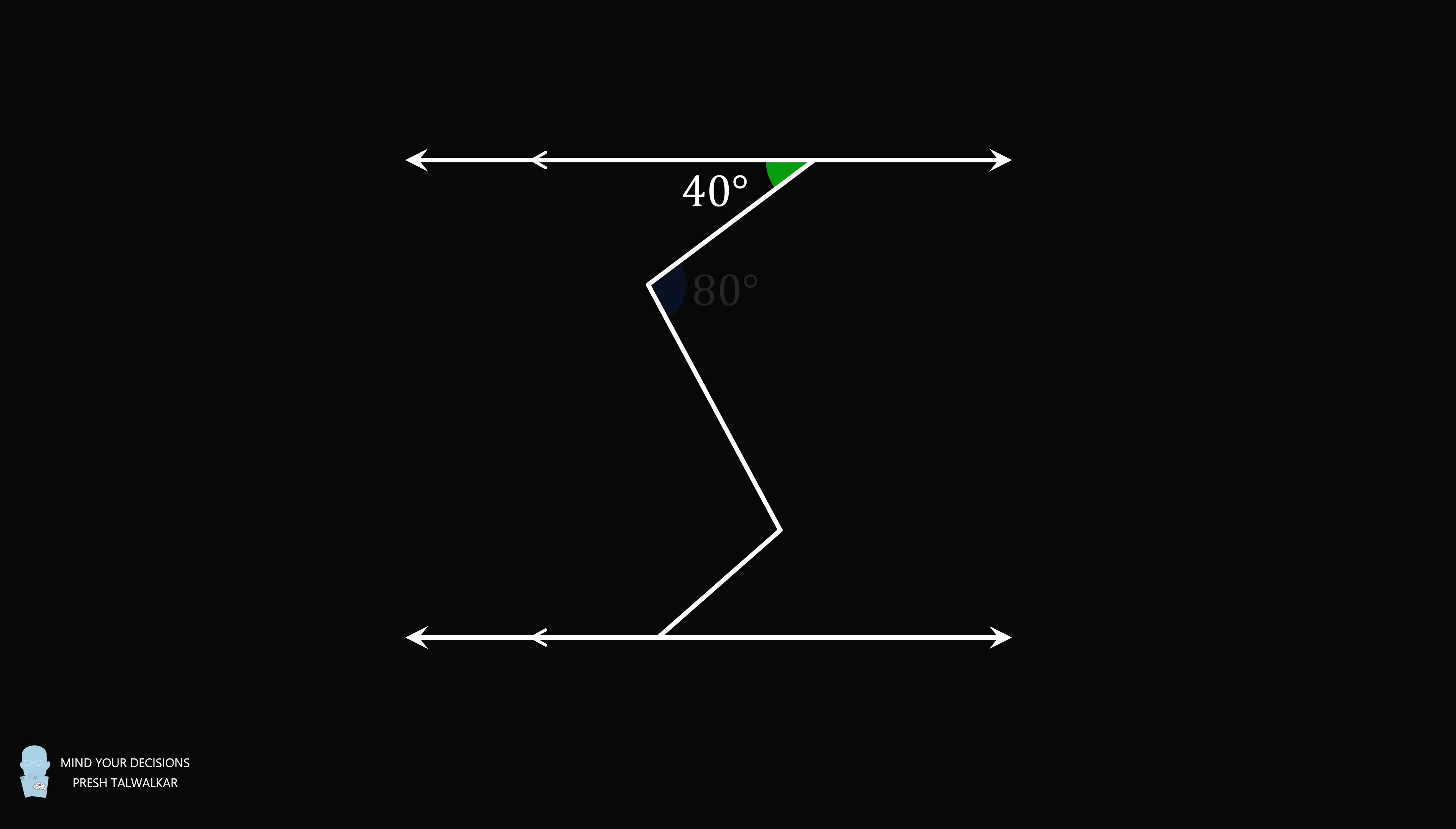We have two parallel lines and a zigzag shape in between the two parallel lines. The top angle is 40 degrees, then we have 80 degrees, then we have x, and then we have 20 degrees.